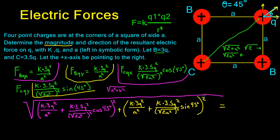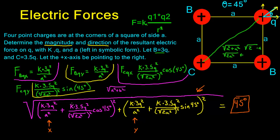For the direction: looking at the setup, the force from B pushing in the x direction and the force from B pushing in the y direction are both K times 3Q squared over A squared — they are equal — so they produce a 45 degree resultant angle. Adding C, which also acts along 45 degrees, means the overall direction is at 45 degrees. That long expression is the magnitude kept in symbolic form — it really shows how things work.